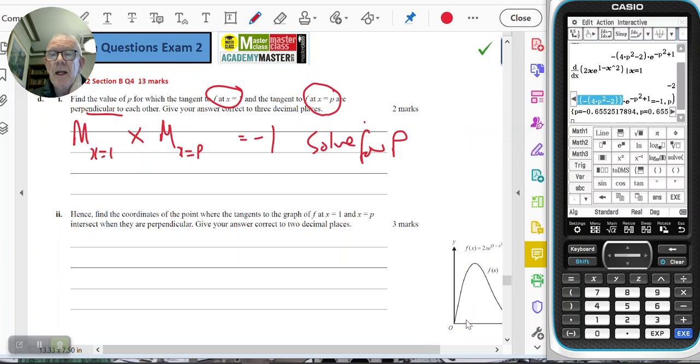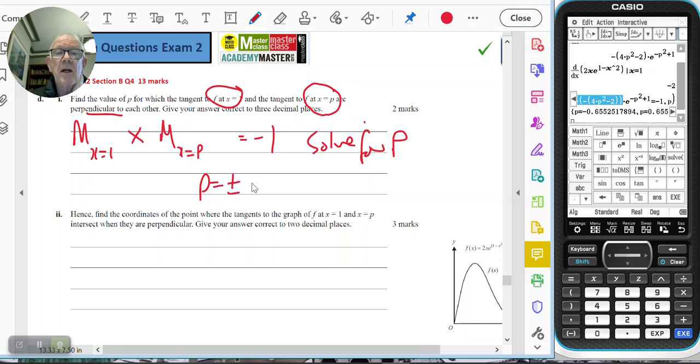Since p is where x touches, I want a positive answer. p equals plus or minus 0.65551789. Therefore, p equals 0.655 to three decimal places.